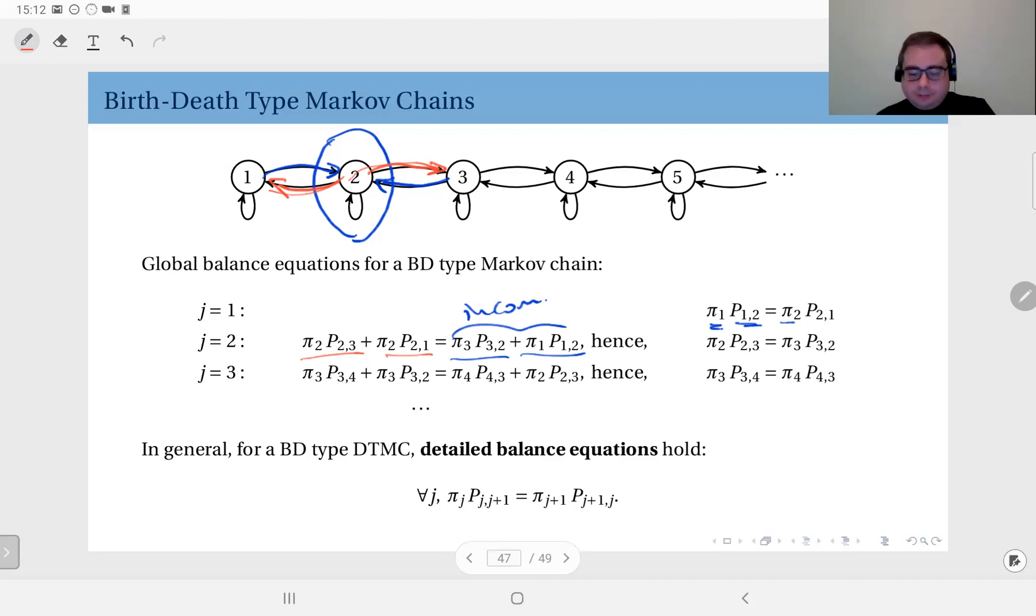From the first global balance equation we established that π_1 P_12 equals π_2 P_21. So this term here equals this term here, so these disappear. What remains is π_2 P_23 and π_3 P_32.